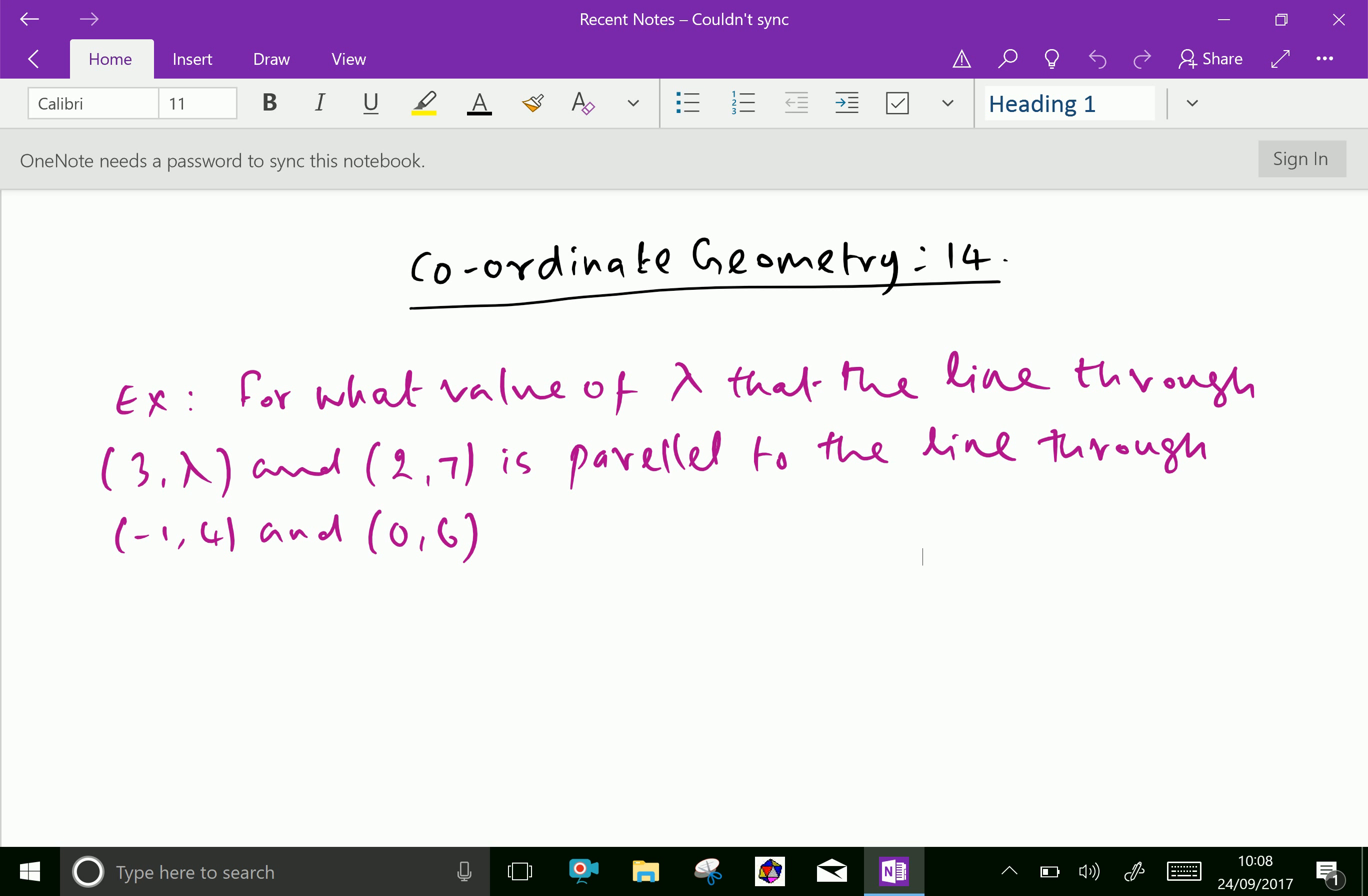Welcome to aminacademy.com. Let us do some examples regarding straight lines. For what value of lambda is the line through (3, lambda) and (2, 7) parallel to the line through (-1, 4) and (0, 6)?